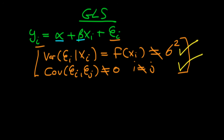We're going to focus on weighted least squares because at most undergraduate levels you don't need to know about generalized least squares in detail — only a particular subset called weighted least squares. Weighted least squares relaxes the second assumption, so the covariance between ei and ej equals zero as under Gauss-Markov conditions, but we still retain the heteroskedasticity term where the variance of ei given xi doesn't equal a constant.